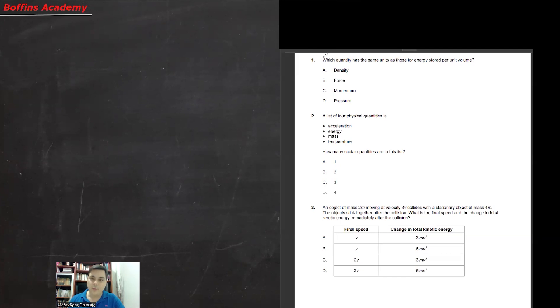Question 1: Which quantity has the same units as those for energy stored per unit volume? So energy stored is in joule, per unit volume is cubic meters. Let's try to analyze that.